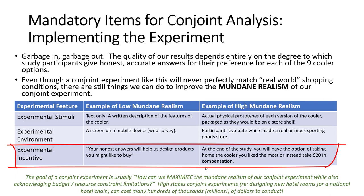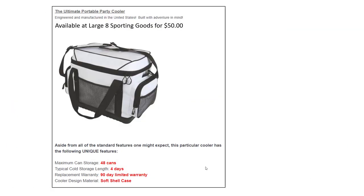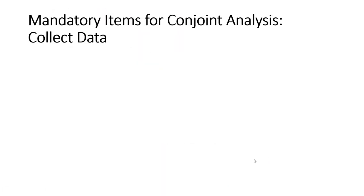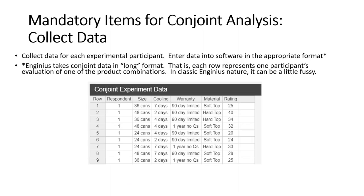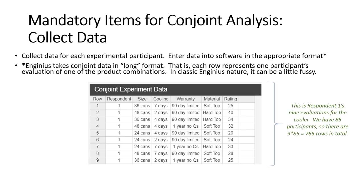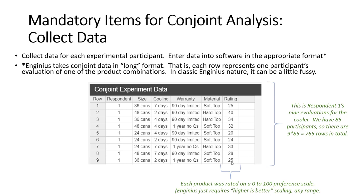The data from the experiment in this presentation was derived from an experiment that had rather low mundane realism. This would be one example of the kind of stimuli presented to our respondents: a brief blurb, pricing and location, an image giving an idea of the cooler, and the features prominently shown in red. Now that we've collected the data, it's time to enter it into our software. In InGenius, data is organized in a long format — that is, each respondent has all of their answers for each of the nine combinations distributed across nine different rows. Here you can see the first of our 85 respondents and their answers to the nine different combinations of coolers. The ratings are captured on the far right-hand side, with our dependent variable measured from 0 to 100, with 100 being the highest preference score.